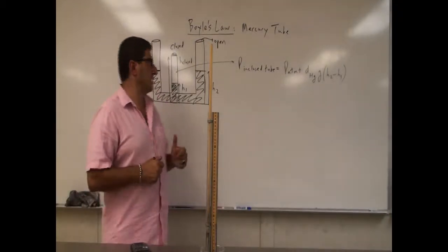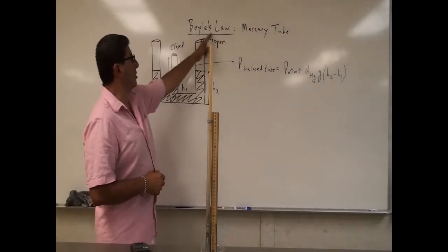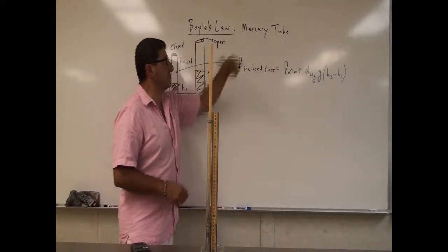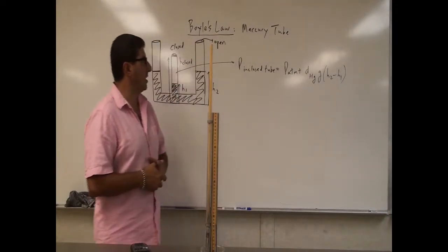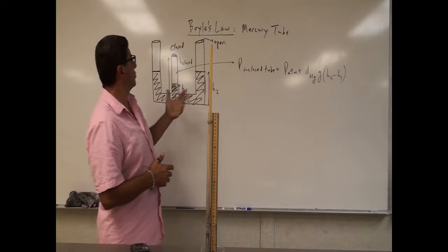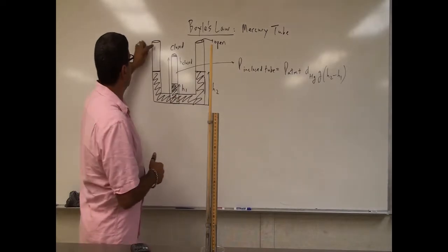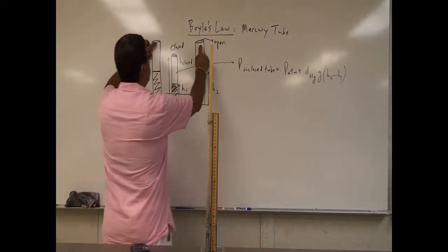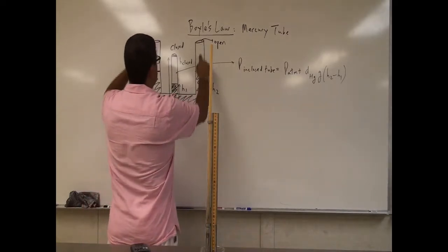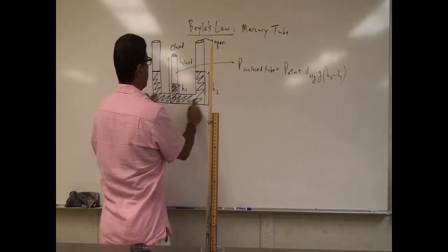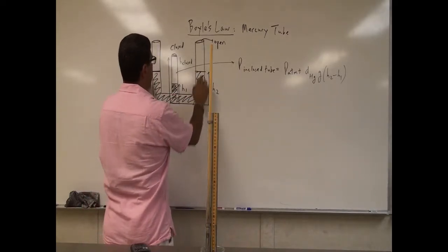Okay, welcome back. Now I'm going to do a demo I call Boyle's Law using a mercury tube. The way that it works is that you have two open tubes here and there's a column of mercury here.